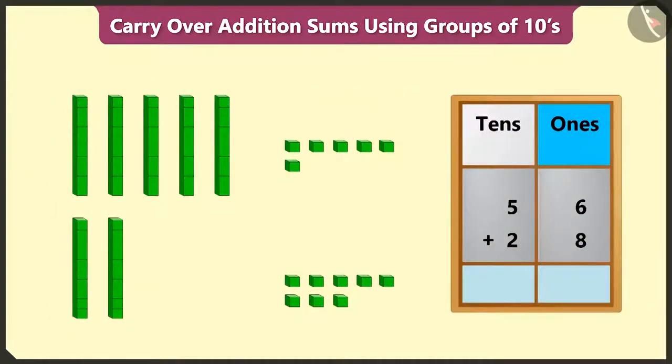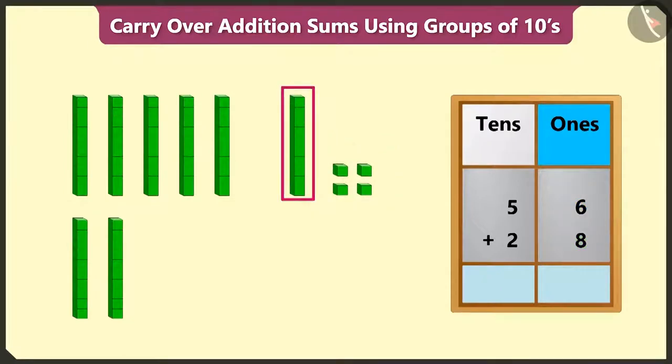First of all, we will add the numbers in the ones place. 6 ones added to 8 ones will equal 14. This means 6 ones and 8 ones added together will equal 14 ones. And out of 14 ones, we can form a group of 1 tens. So, 14 has 1 tens and 4 ones. Now, we have to write 4 in the ones box.